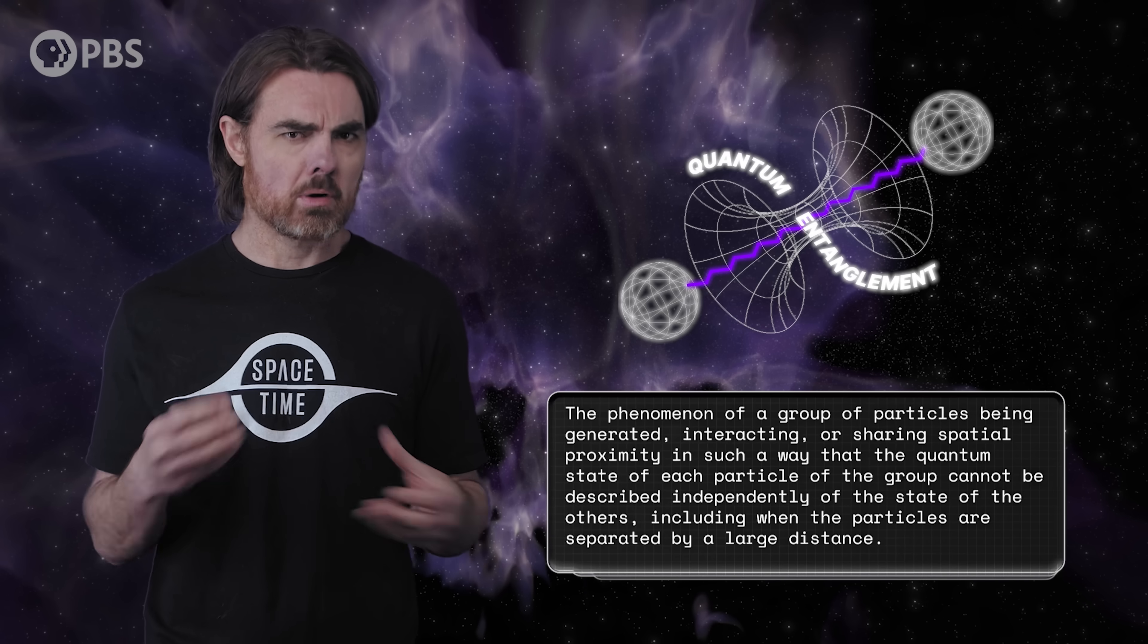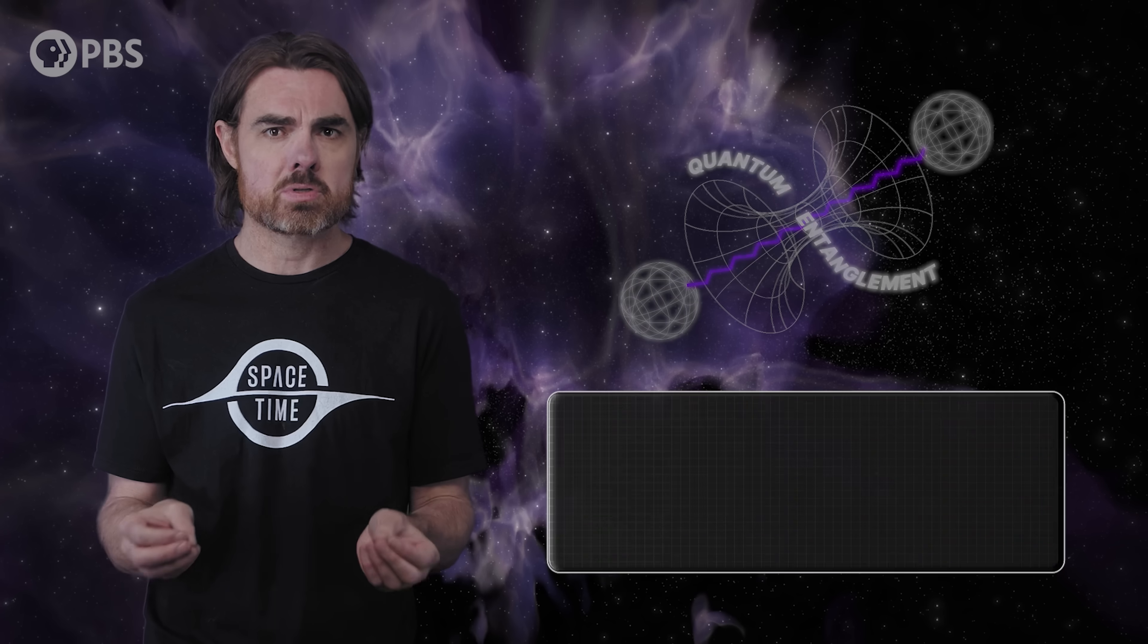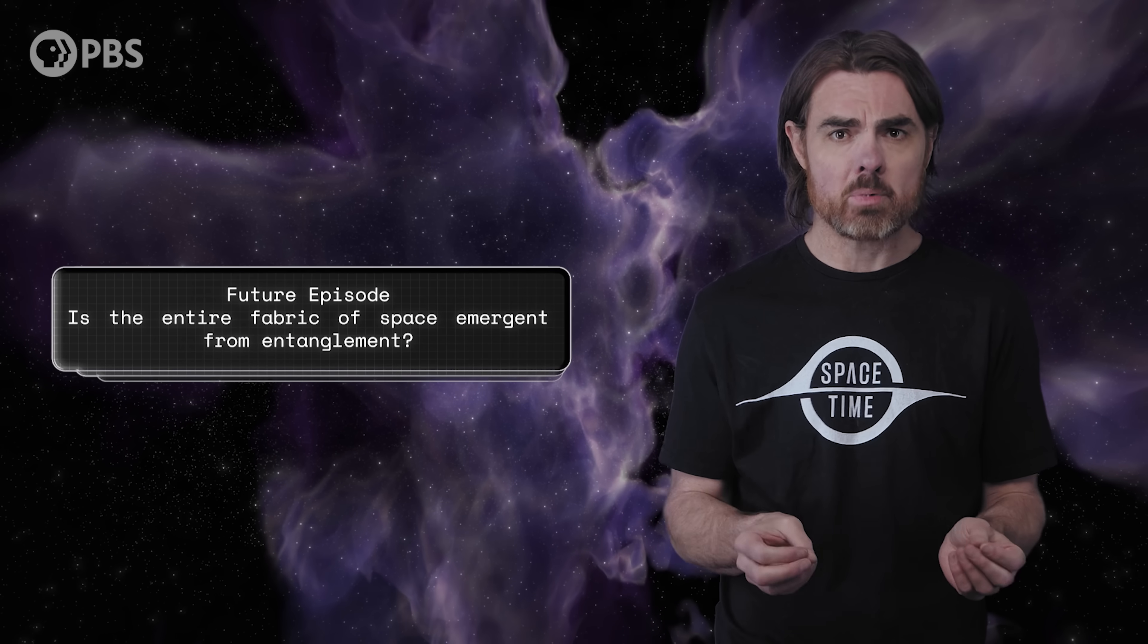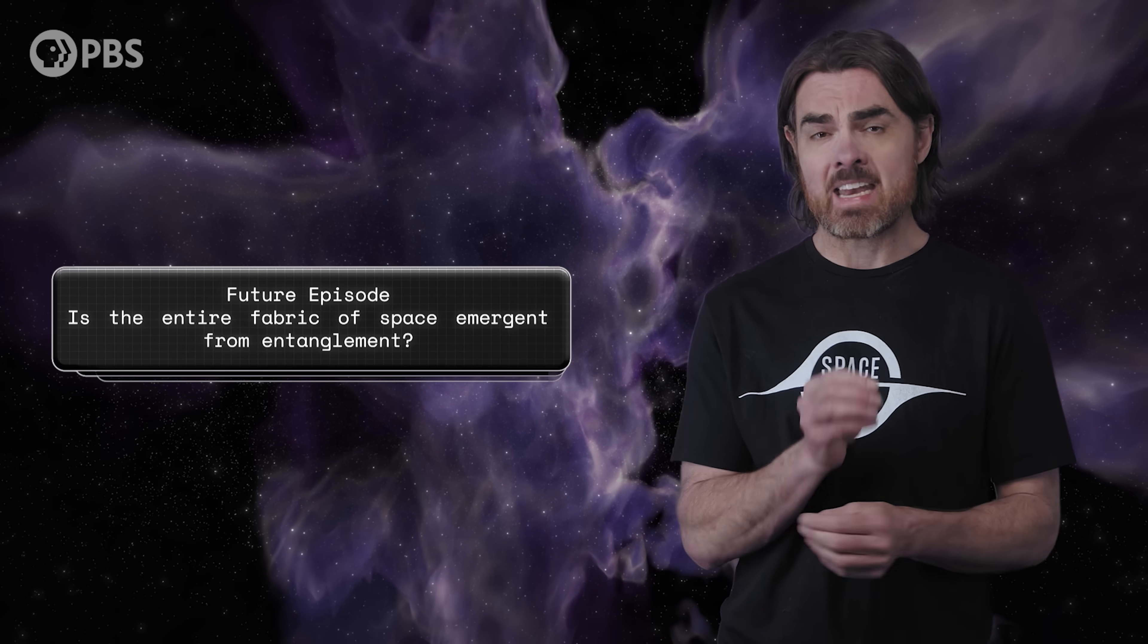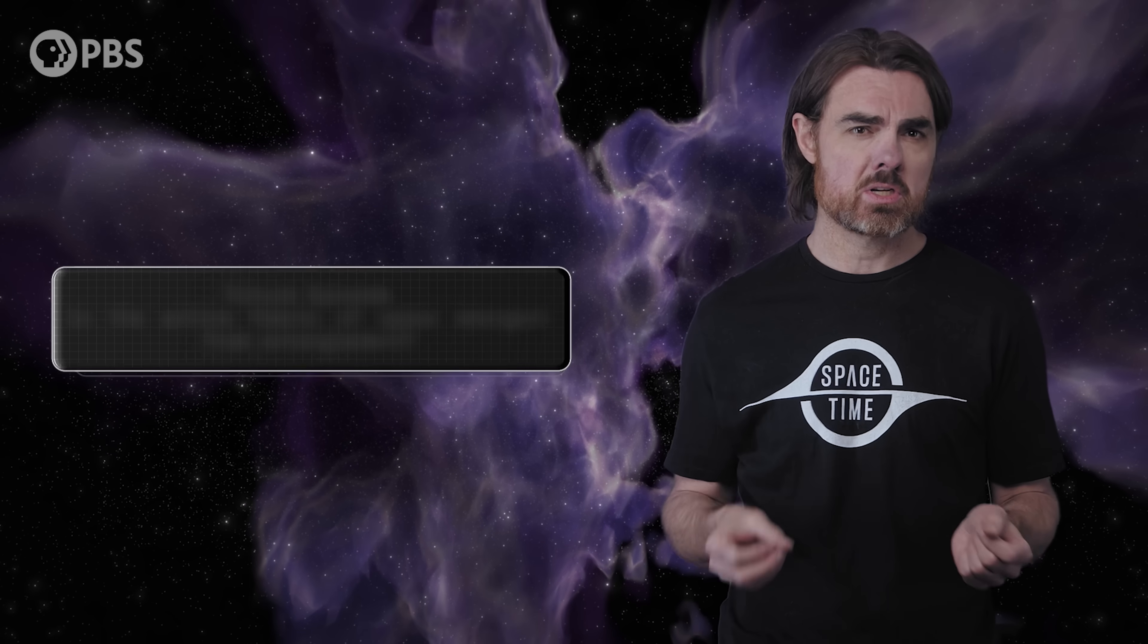The subtle correlations between the bits of information that define the properties of particles. In fact, as we'll see in upcoming episodes, it's starting to look like the entire fabric of space may be emergent from entanglement. That space is sort of knit together from the network of mutual information of its contents. This idea of the role of entanglement came from thinking about black holes in parallel to the stuff that led to this minimal Planck length and the holographic principle.